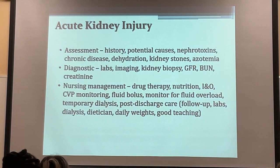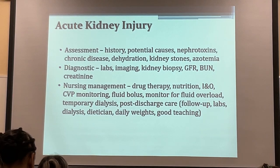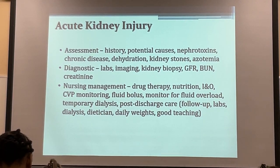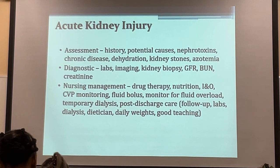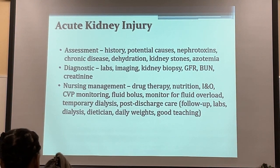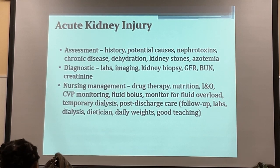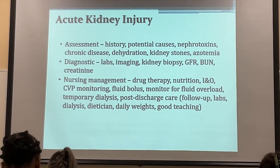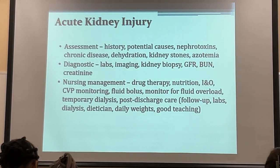History and diagnostics: identify potential causes — nephrotoxins, pre-renal, intra-renal, or post-renal. Tests include UA, GFR, BUN, creatinine, potassium, ultrasound, and possibly a kidney biopsy if intra-renal damage is suspected.